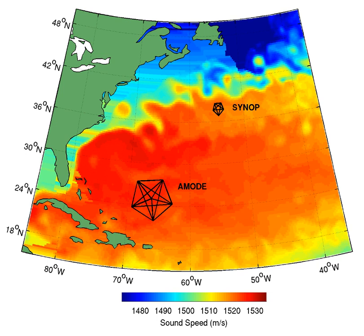Ocean acoustic tomography is a technique used to measure temperatures and currents over large regions of the ocean. On ocean basin scales, this technique is also known as acoustic thermometry. The technique relies on precisely measuring the time it takes sound signals to travel between two instruments, one an acoustic source and one a receiver, separated by ranges of 100 to 5,000 kilometers.